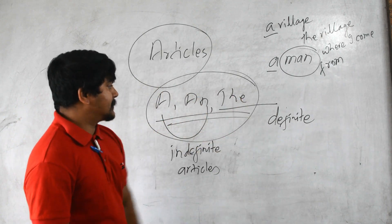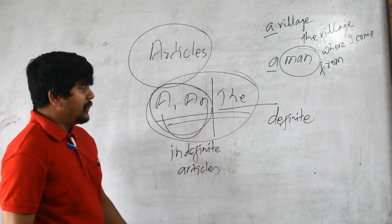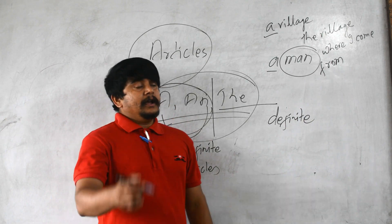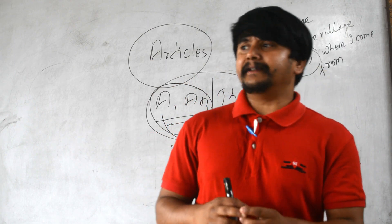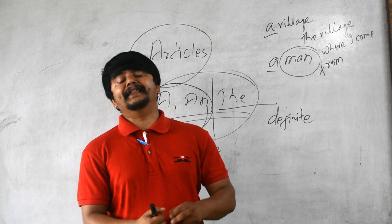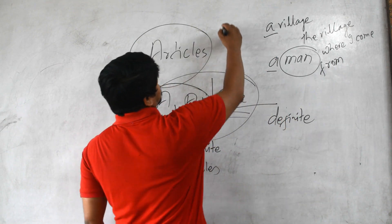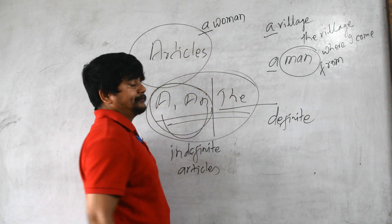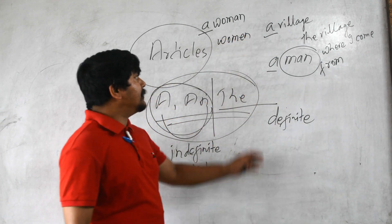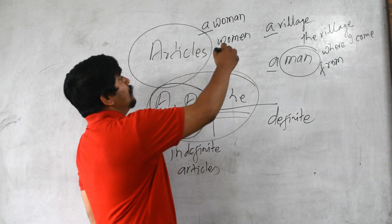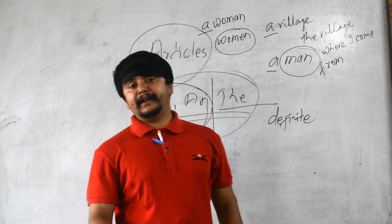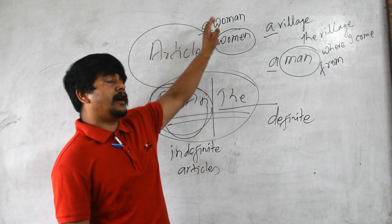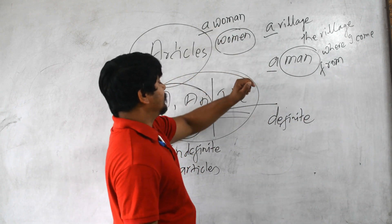Now let's talk about a and an. The first thing you should know is you are allowed to use a or an before a noun that is singular in number and countable. For example, 'woman' is a noun, countable and singular, so we can write 'a woman.' But if we say 'women,' we cannot use a or an because it is plural.